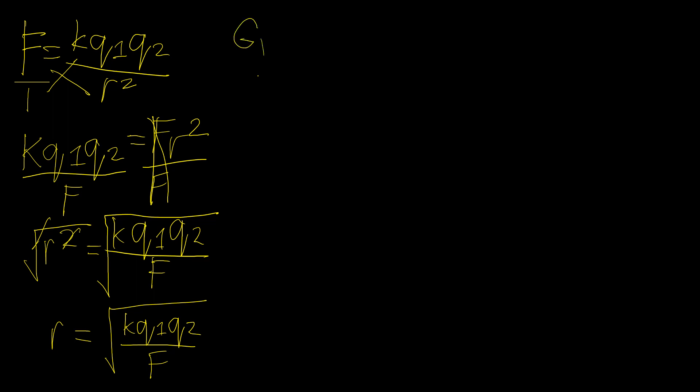Given in the problem, we have Q1 equals positive 150 nanocoulombs, which means times 10 raised to negative 9 coulombs. And Q2 equals 250 nanocoulombs, which means 250 times 10 raised to negative 9 coulombs. They are both positive, so we'll find the value of R.